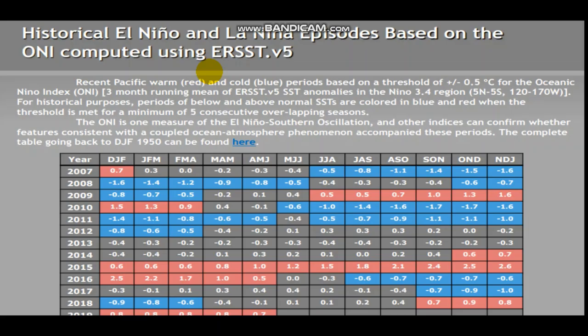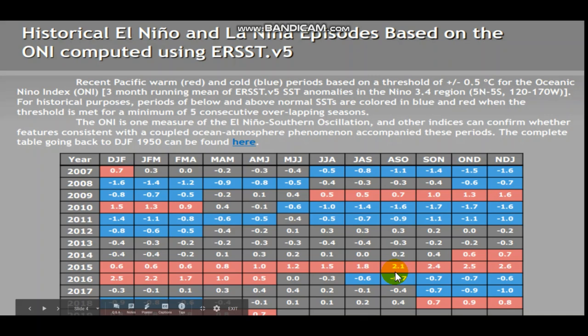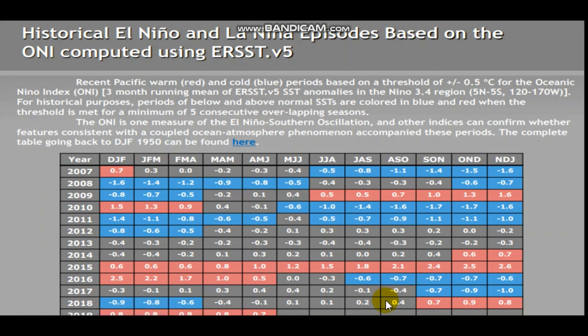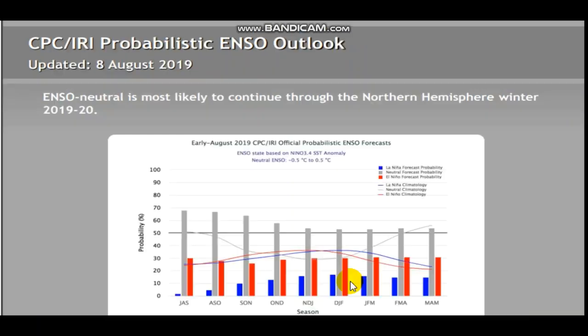This is a historical El Niño and La Niña episode chart based on the ONI, which measures the El Niño Southern Oscillation. It requires at least three consecutive months of +0.5°C or above for El Niño, or -0.5°C or below for La Niña. Anything in between is neutral. We were in an El Niño pattern last year — it started as neutral through September, then transitioned into El Niño.